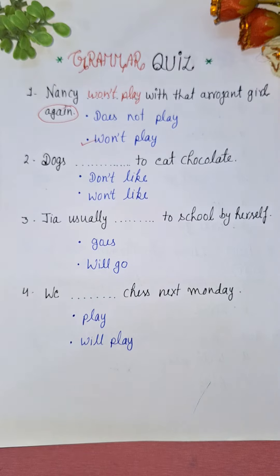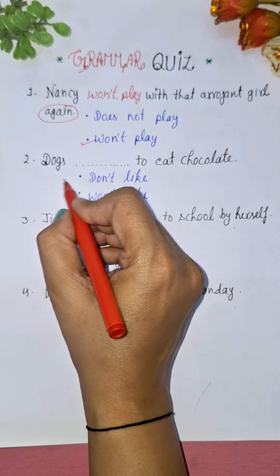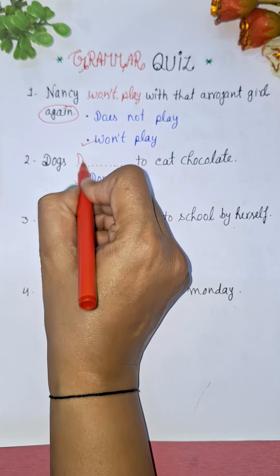Next: Dogs dash to eat chocolate. Dogs ko pasand hai chocolate khana, ya dogs pasand nahi karengi chocolate khana? Simple present — so the answer is 'dogs don't like' to eat chocolate. 'Don't like' is the correct option.